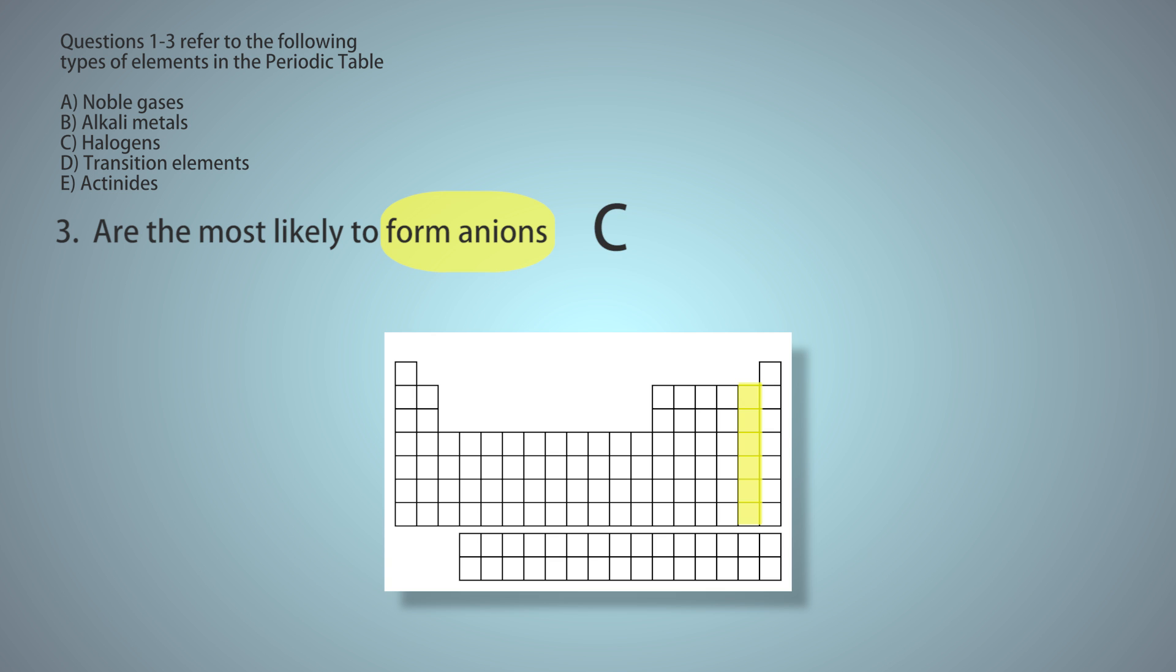You might be tempted by B, the alkali metals, which are in group 1, but those are most likely to form cations, positively charged ions. If they donate an electron and become cations, they also achieve noble gas electron configuration. But again, that's cations, not anions, so don't be fooled.